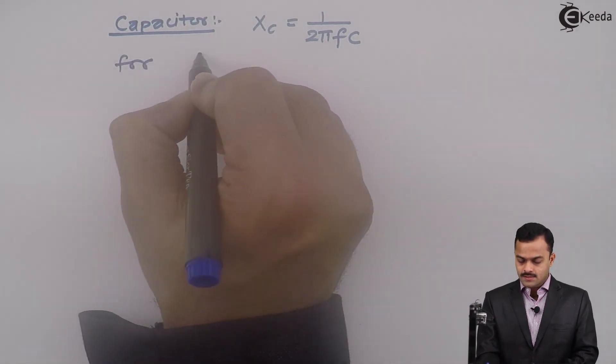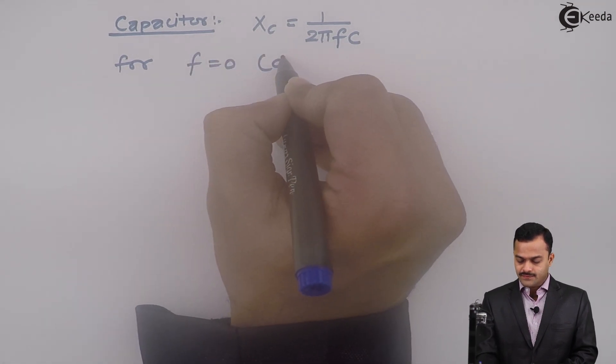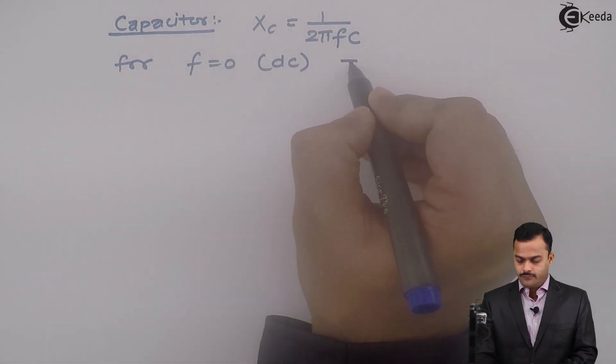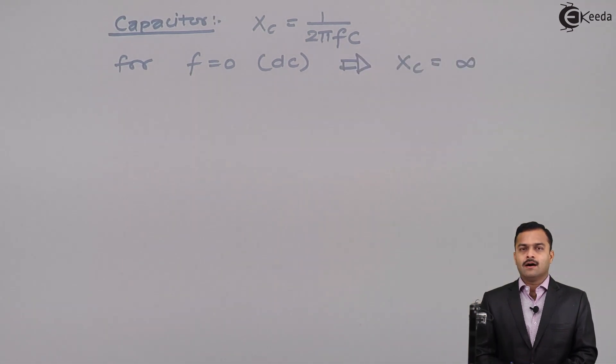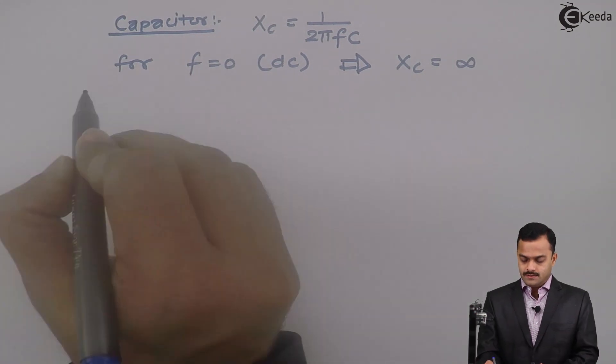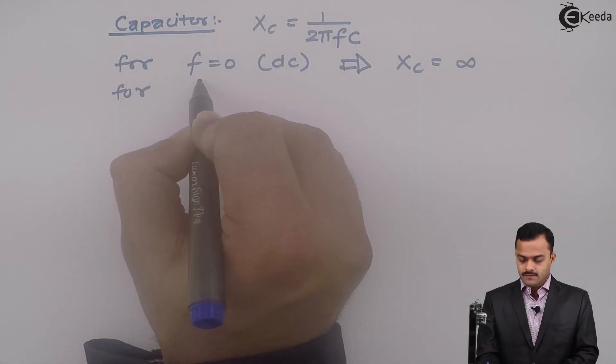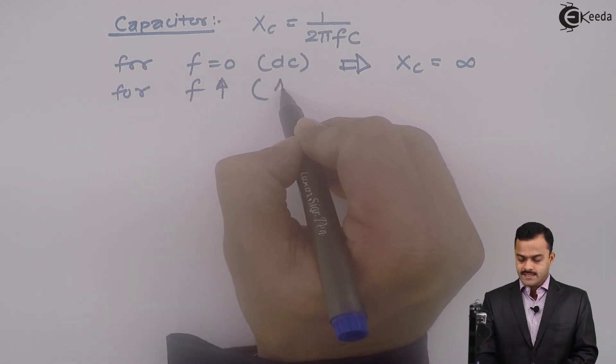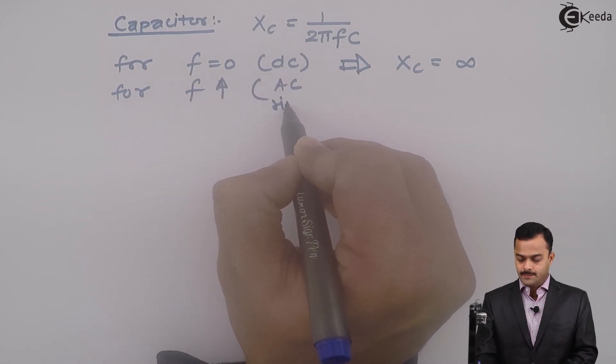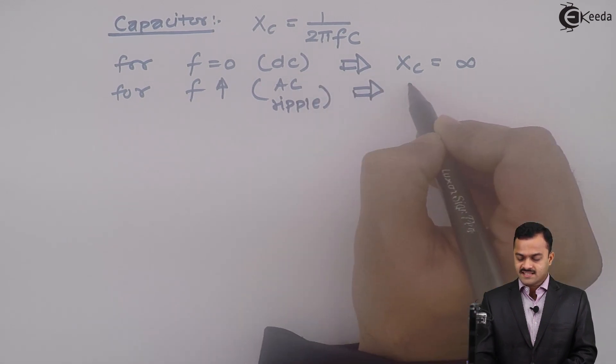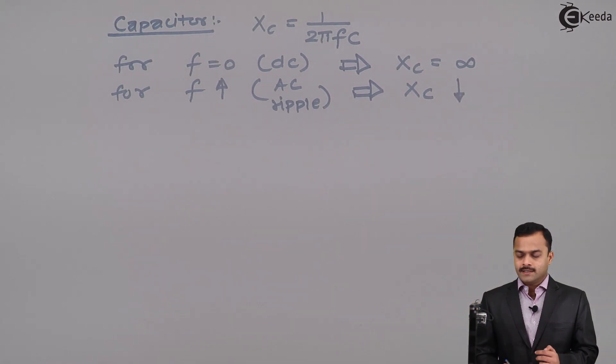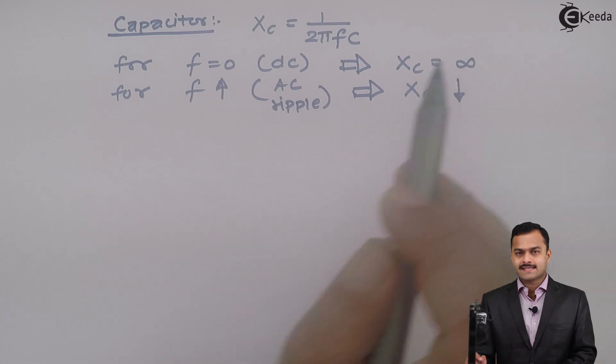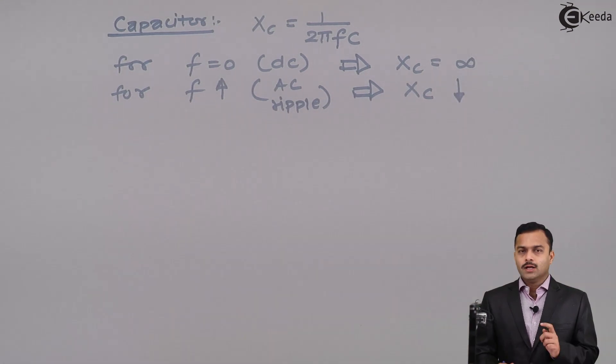If I have a frequency 0 that is the case for a DC current then obviously I will get XC as infinite, a very high value. Moreover, for the frequency which is increasing in nature AC current or especially ripple in this case, the XC will be decreasing. It will offer very high resistance for DC but very low resistance for AC ripple.